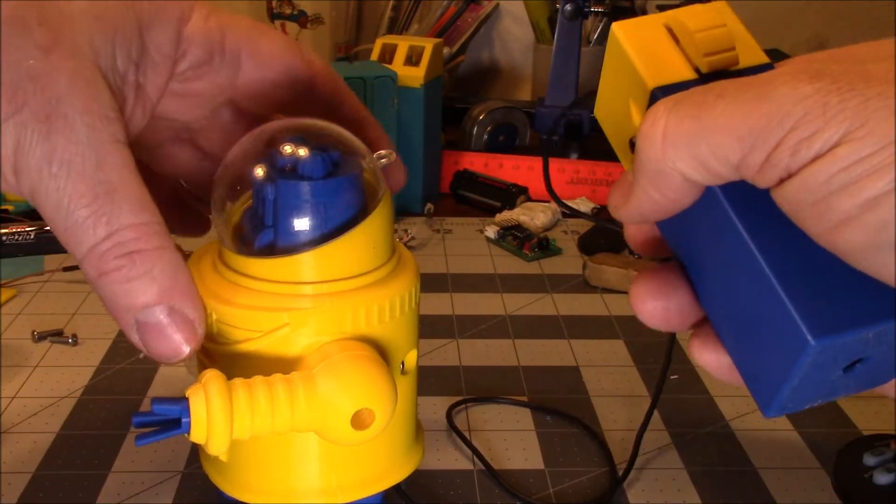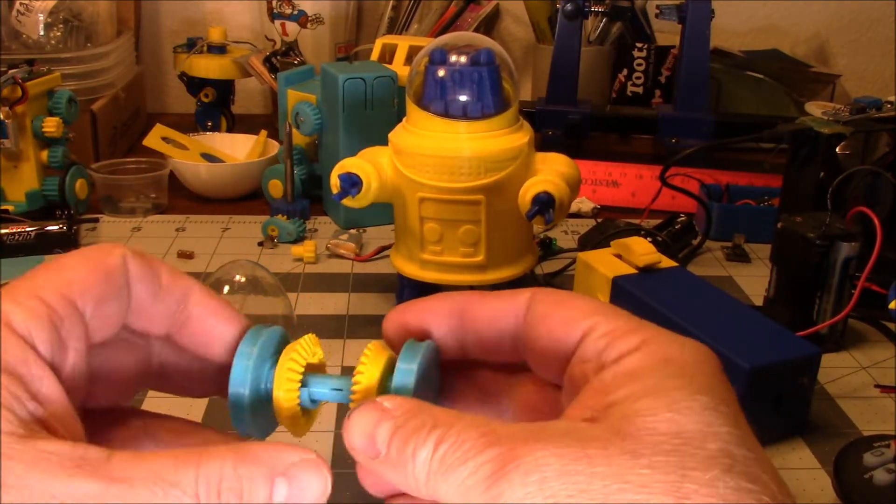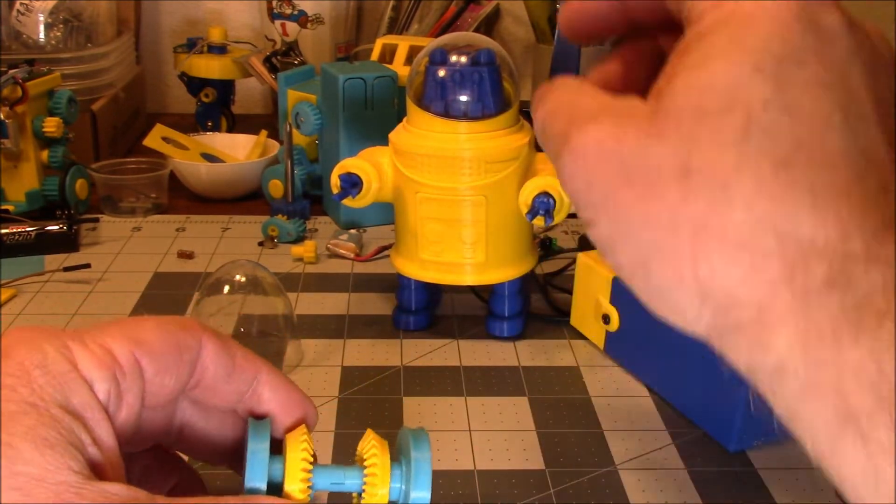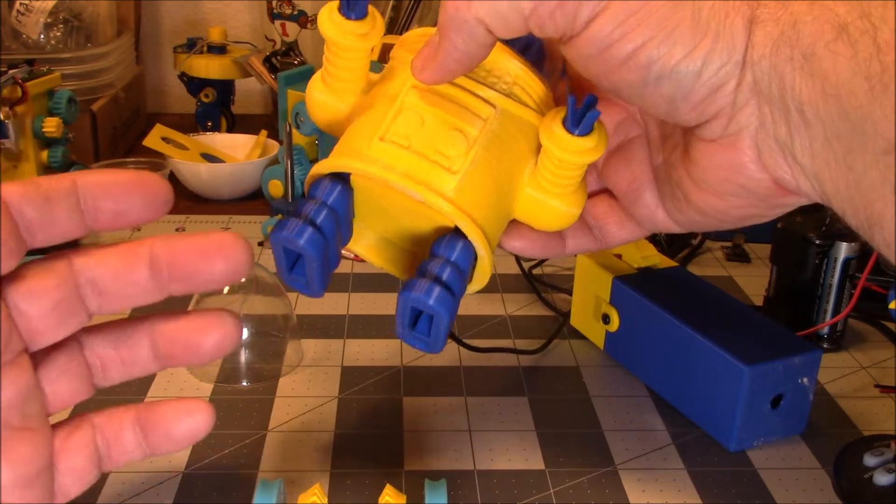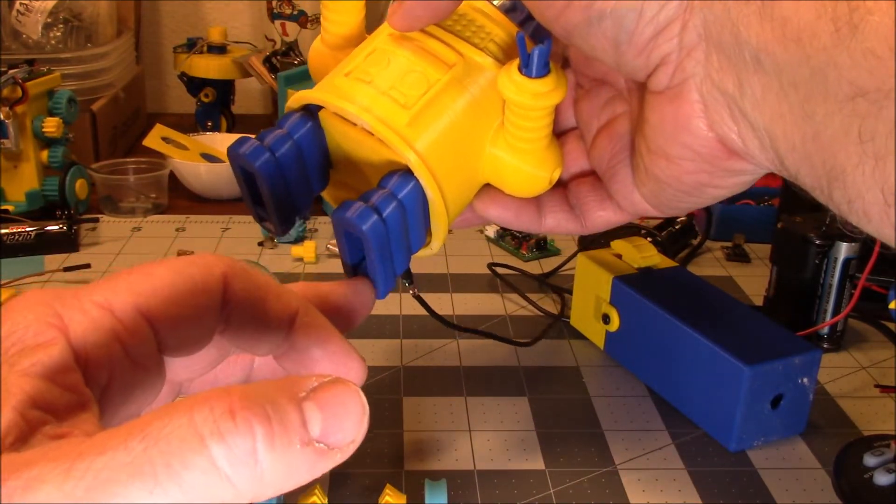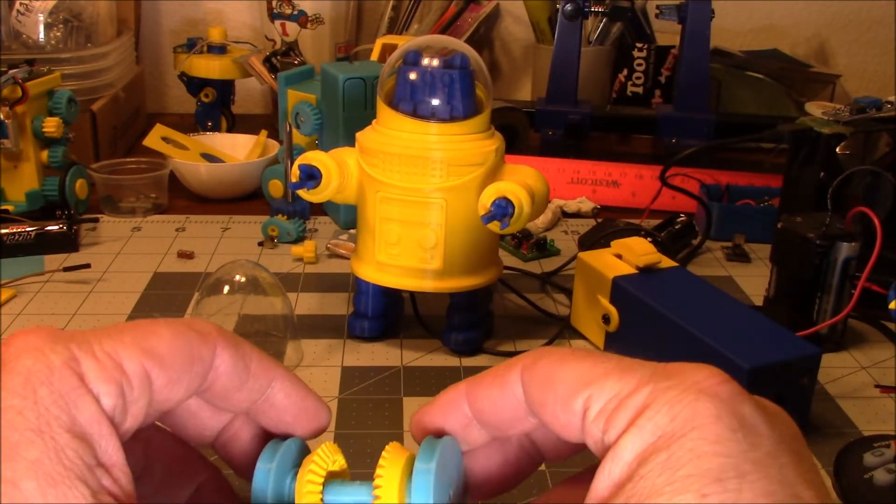So it's called a pin walker. This ratchet mechanism is what does the reverse direction on one side of it. One pin always goes in the direction that the motor is driving it. The other pin always goes in the same direction. That gives you your forward and your reverse spinning action.